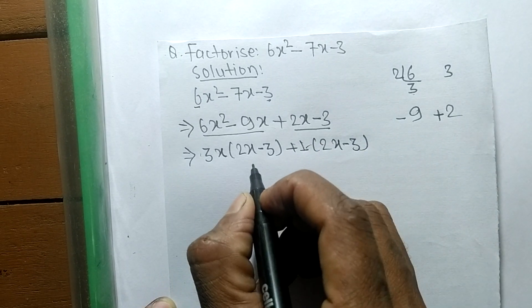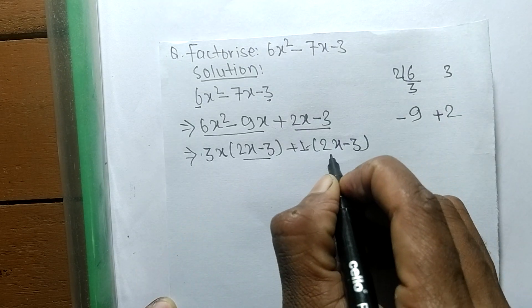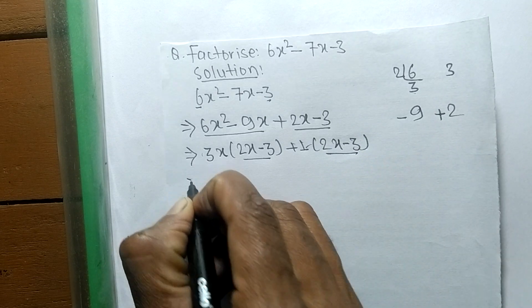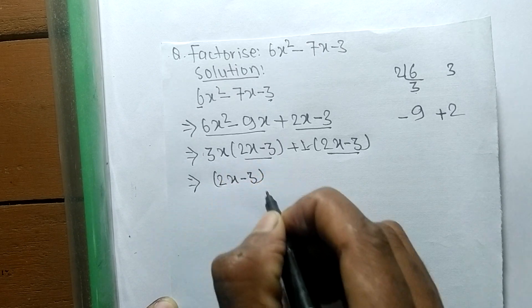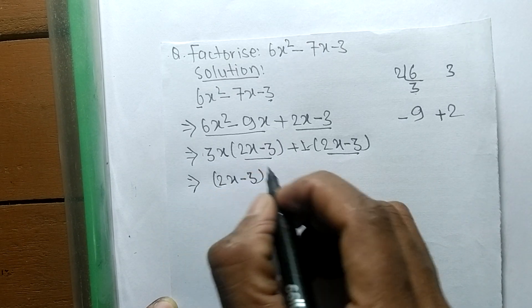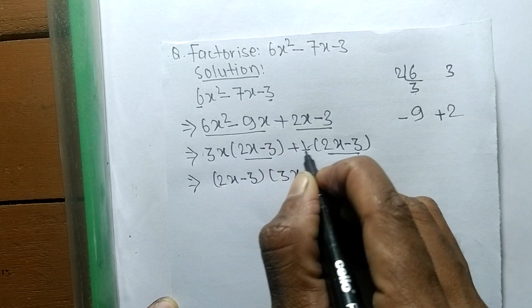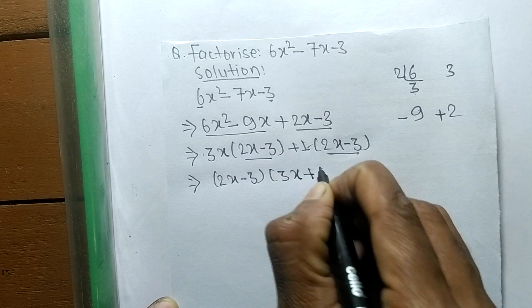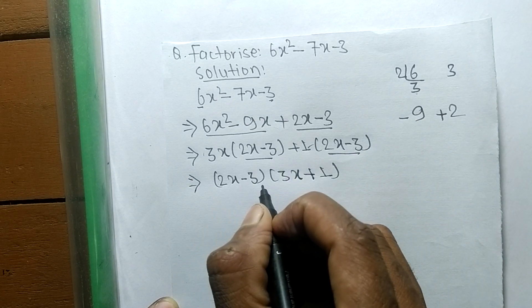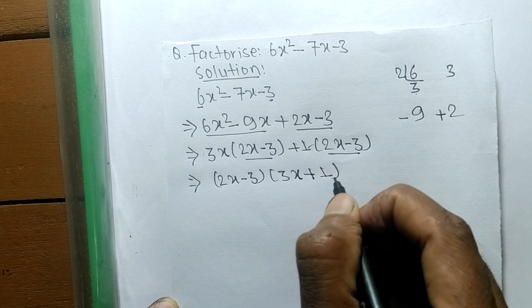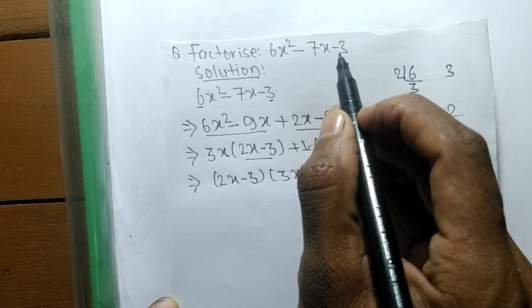As you can see, in the first expression there is 2x minus 3, and in the second one there is also 2x minus 3. So we take 2x minus 3 as a common factor. The remaining parts are 3x from the first expression and plus 1 from the second. So 2x minus 3 and 3x plus 1 are the factors of 6x² minus 7x minus 3.